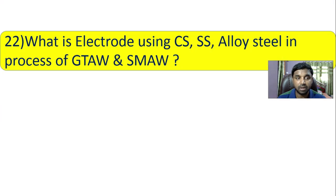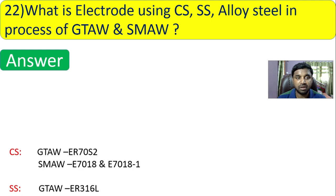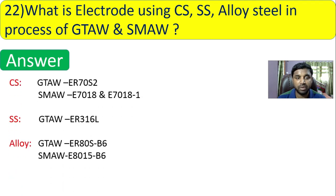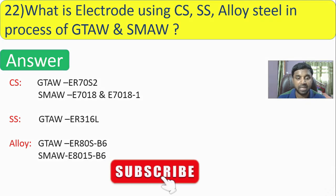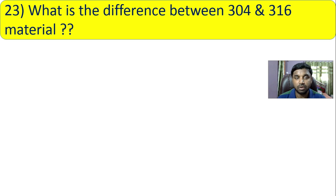Question 22: what electrodes are used for carbon steel, stainless steel, and alloy steel in GTAW and SMAW processes? For carbon steel: GTAW — ER70S-2; SMAW — E7018 and E7018-1. For stainless steel: GTAW — ER316L. For alloy steel: GTAW — ER80S-B6; SMAW — E8015-B6. You must remember these electrodes.